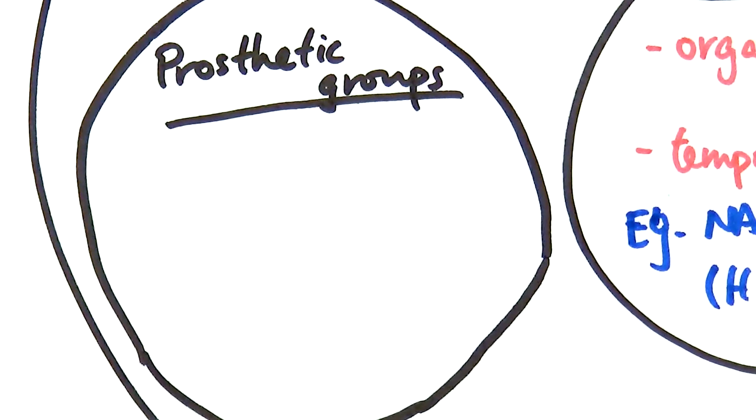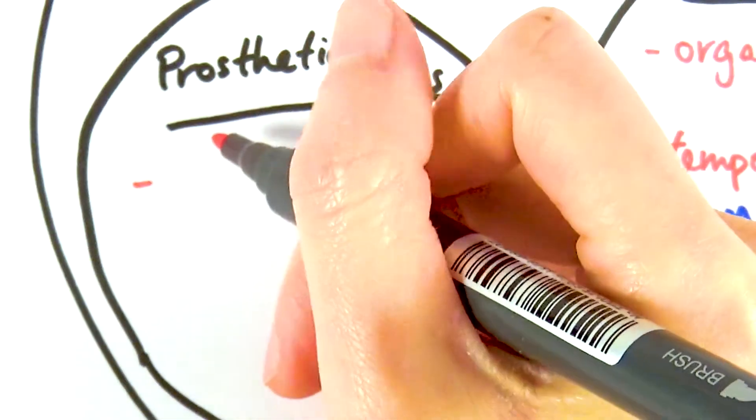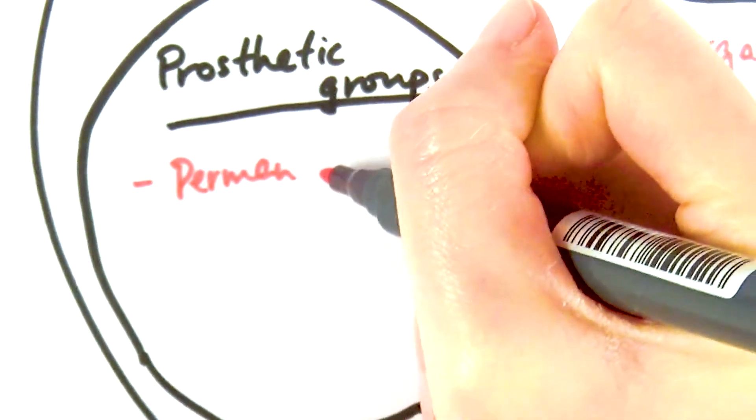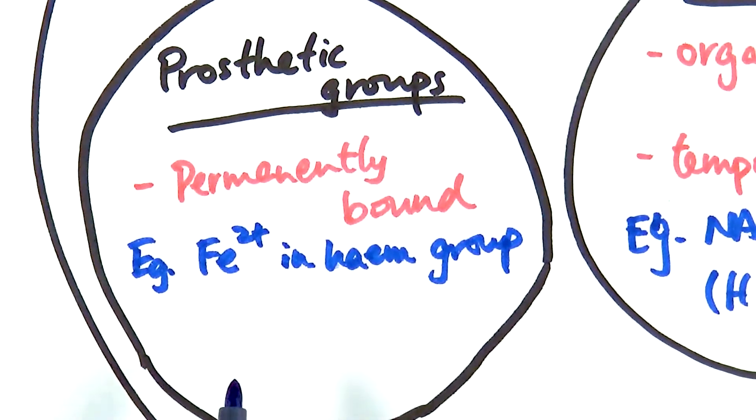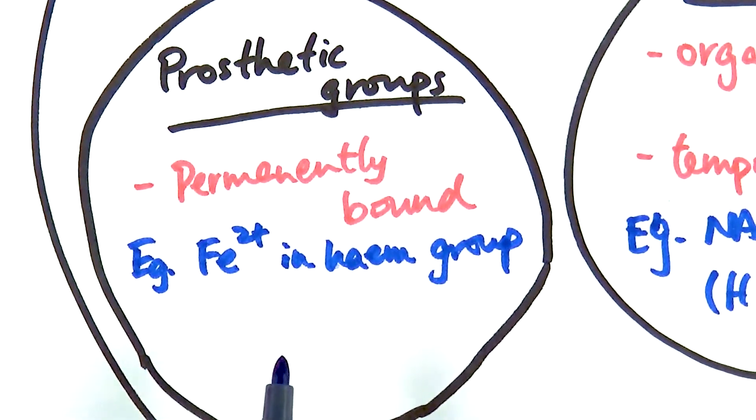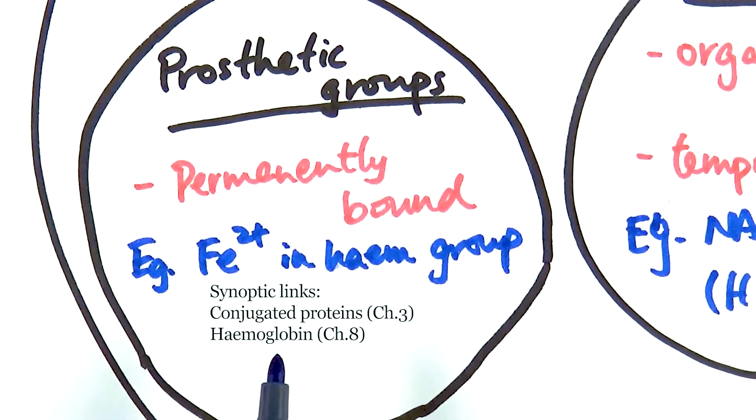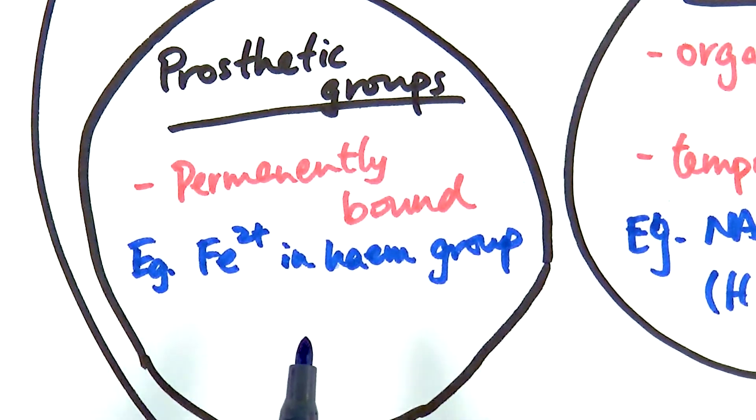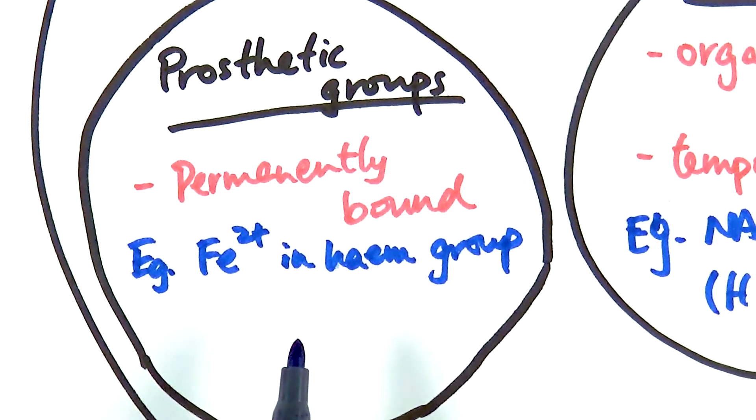The last one is about prosthetic groups, and prosthetic groups are probably the one that's more different than the rest of them, because prosthetic groups are cofactors that are permanently bound to the actual enzyme or the protein. This is a more famous example of a prosthetic group. You probably would have come across it in chapter three about biological molecules, about conjugated proteins, and you would come across it again when you go into chapter eight, transport in animals about the transport of oxygen. Iron ion is found in the heme group, which is found inside the subunits of a hemoglobin.